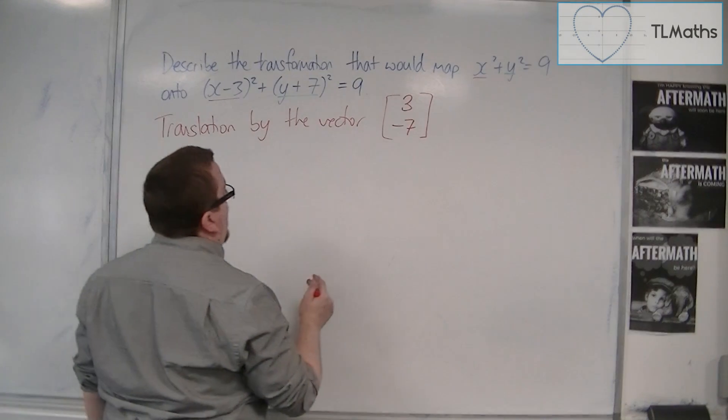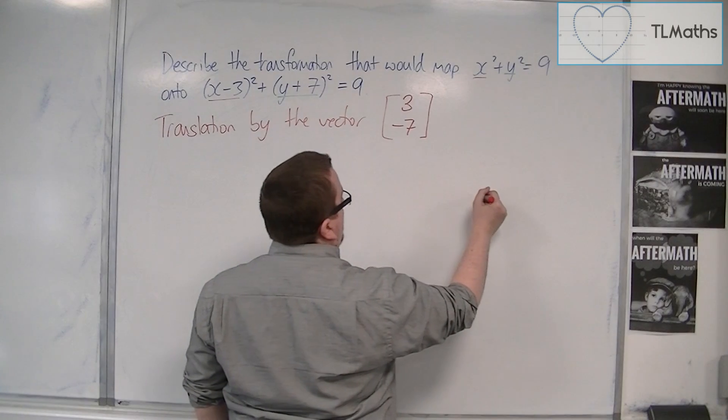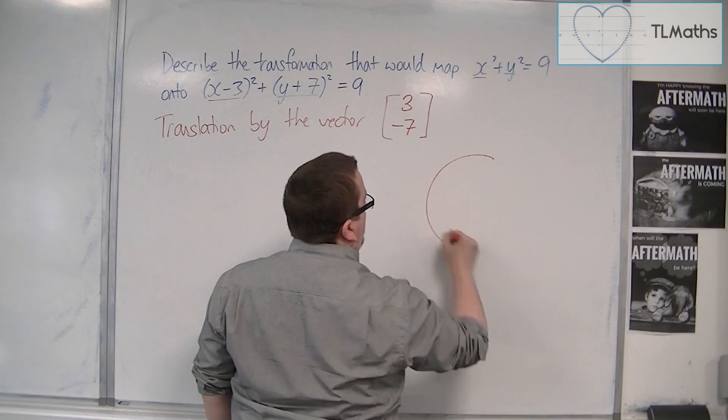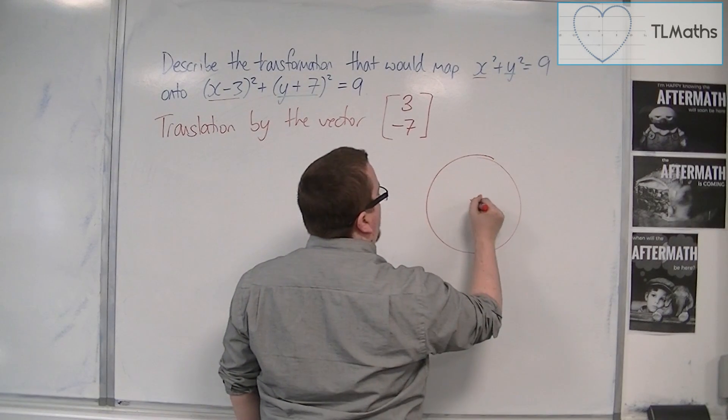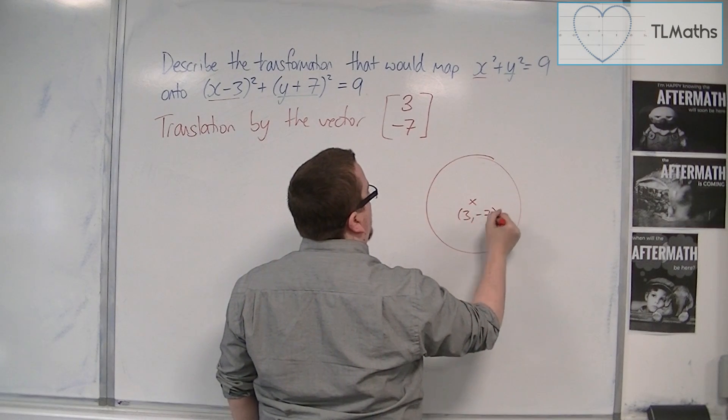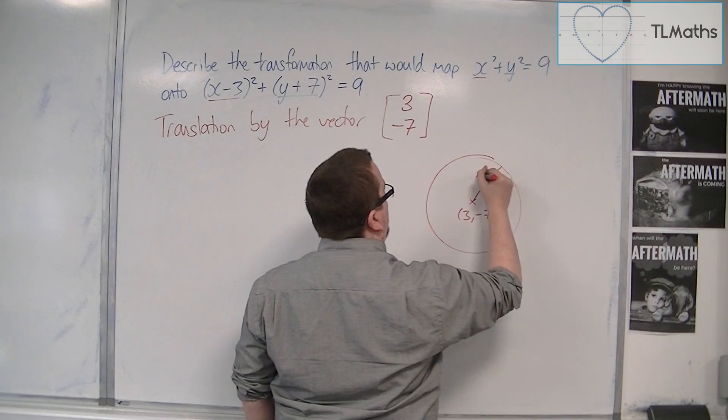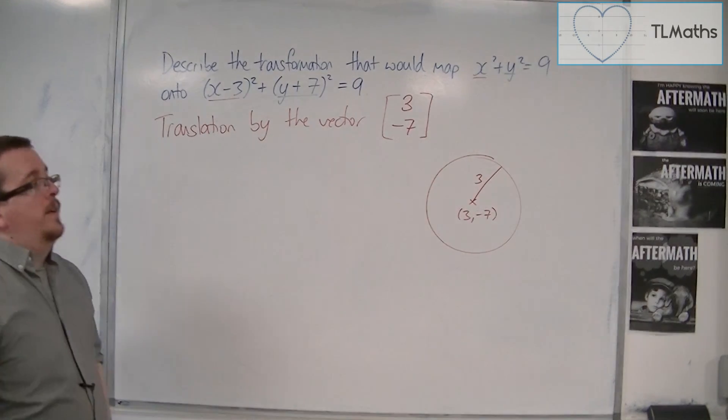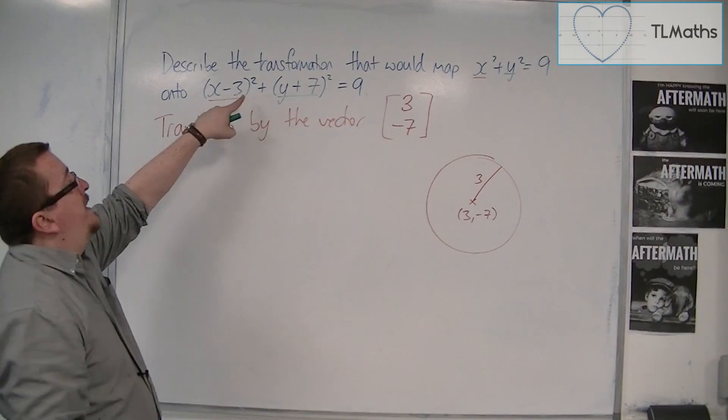So we now have a circle, so here's a circle, here is its center, 3 minus 7, and it has a radius of length 3. That is what we're saying here.